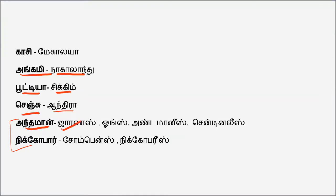The Andaman island tribes include Jaravas, Onges, Andamanese, and Sentinelese. These are the four major tribal groups of the Andaman islands.